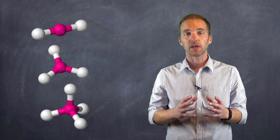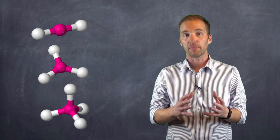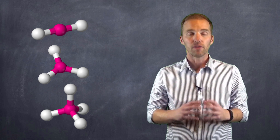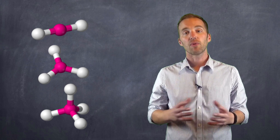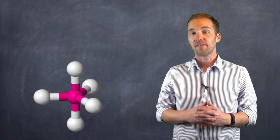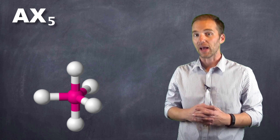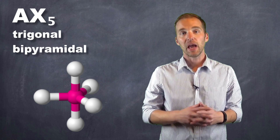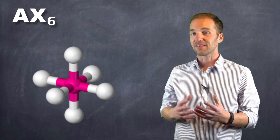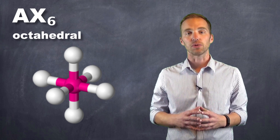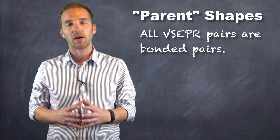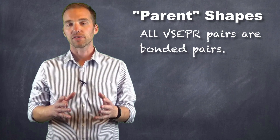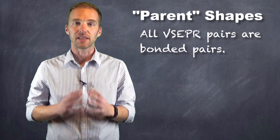In all of these instances, we've looked at molecules where the VSEPR pairs are all bonded pairs, and they all obey the octet rule. But some molecules can undergo octet expansion and give rise to other shapes, like the AX5-class molecule, which we call a trigonal bipyramidal shape. We also have an AX6-class molecule, which has eight enclosed sides — we refer to this as octahedral. All of these shapes are what I refer to as parent shapes, where all VSEPR pairs are bonded pairs.